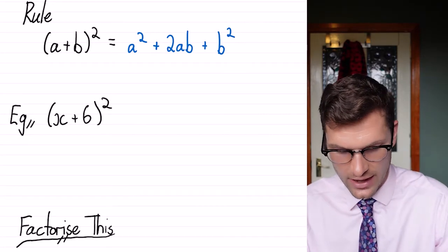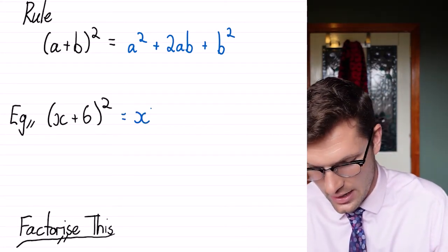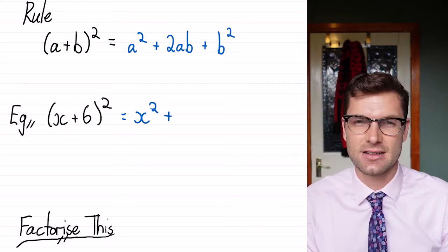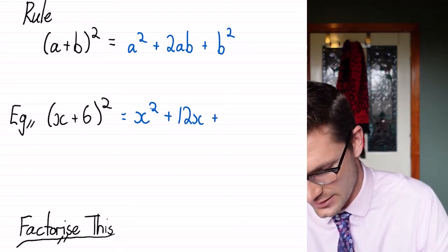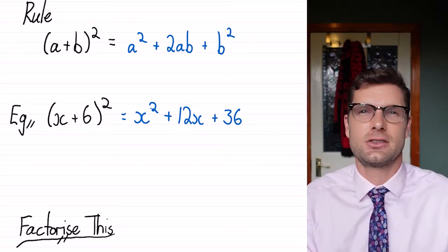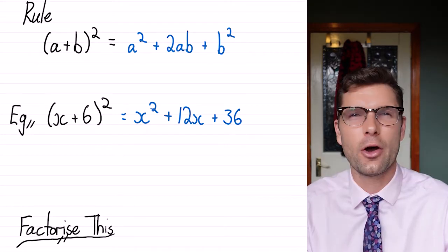So we can see really quickly that x plus 6 all squared is going to become x squared plus not 6x, but 12x plus 36. So this little shortcut will definitely help us out down the line when we get into harder quadratics.